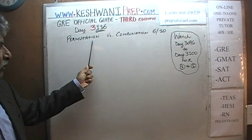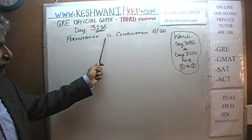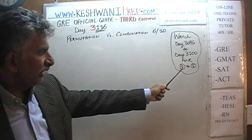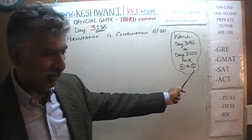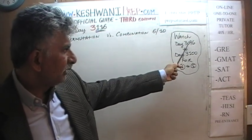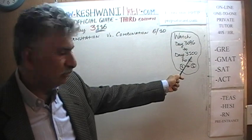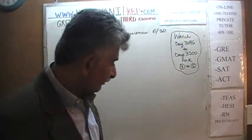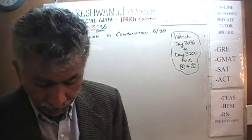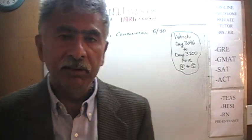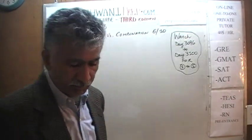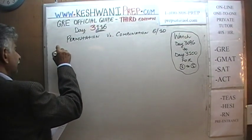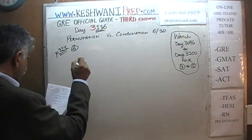We are going to cover the topic of permutation and combination, a topic that we already covered halfway through. Today is the sixth video in the series of ten. If you are interested in watching the first five videos on permutations versus combinations, watch day number 96 through 100 — day 3096 to 3100. In the next five parts, starting from today, six through ten, we will do the problems that appear on page 321, the data analysis exercise. Here is problem number six.